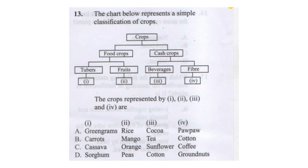The chart below represents a simple classification of crops. We have crops divided into food crops and cash crops. Food crops are further classified into tubers and fruits, while cash crops are classified into beverages and fiber. The question asks which crops are represented by Roman numerals one, two, three, and four.